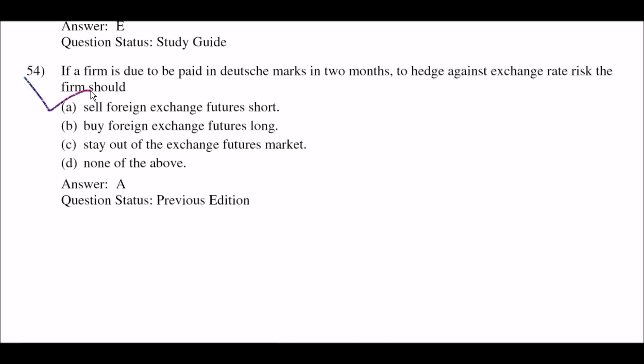Next question: if a firm is due to be paid in a foreign currency in two months, to hedge against the exchange rate risk, the firm should — option A: sell foreign exchange futures short; option B: buy foreign exchange futures long; option C: stay out of the exchange futures market; option D: none of the above. The right answer is option A: sell foreign exchange futures short.